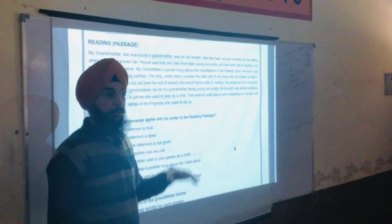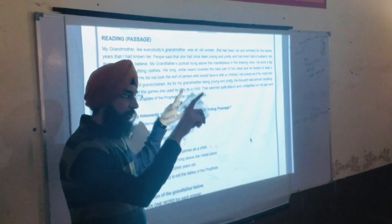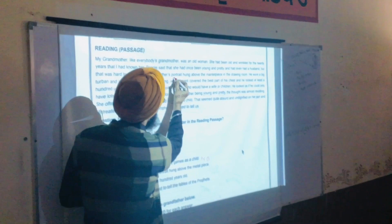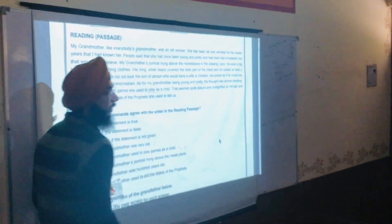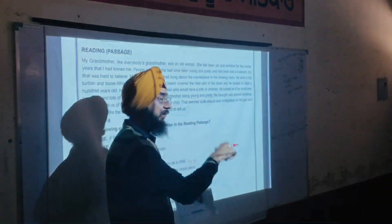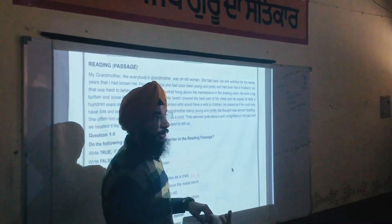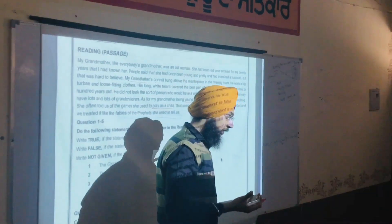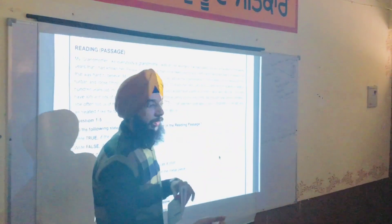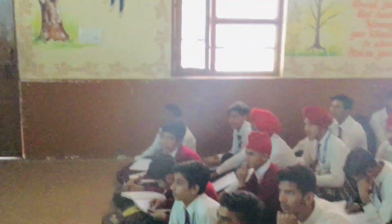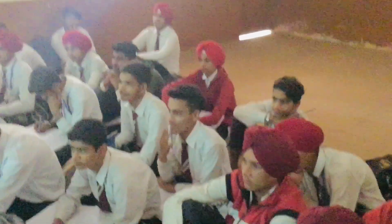Grandmother's portrait — a portrait is a picture or painting — was said to be hanging on the wall. But in the passage: 'My grandfather's portrait hung above the mantelpiece.' The answer is contradicting. Contradictory means the answer we are finding is different from what is written. So the answer will be False.